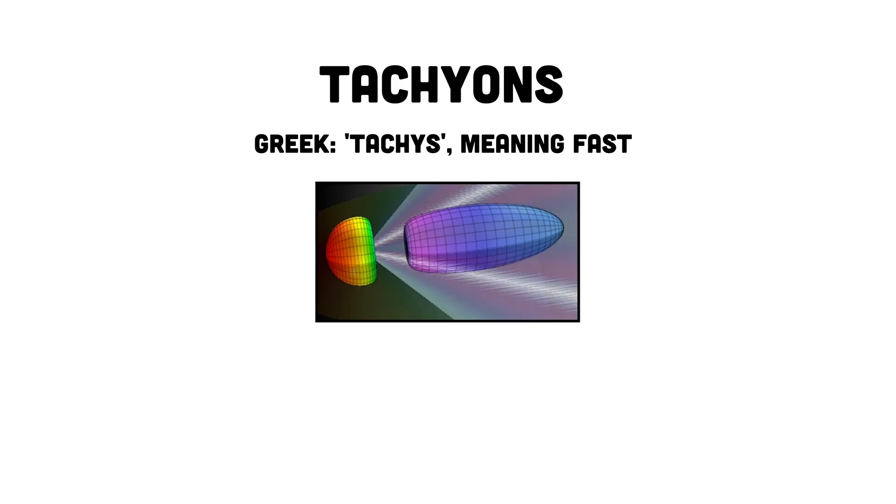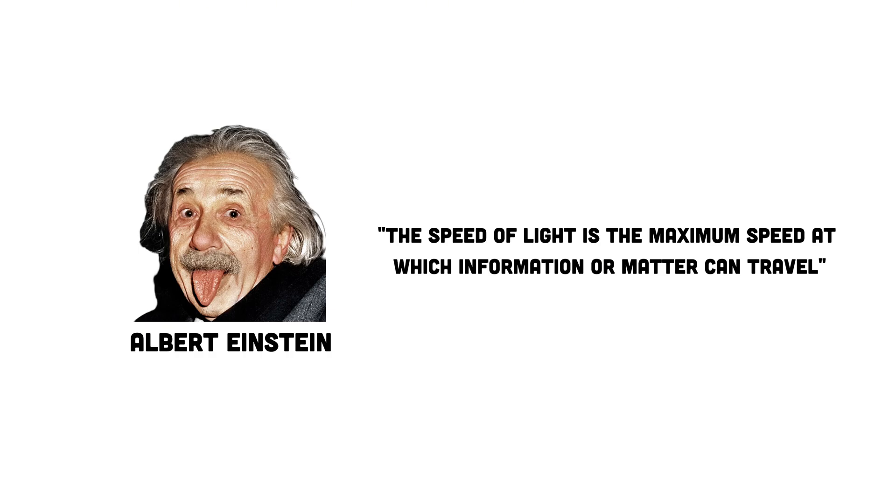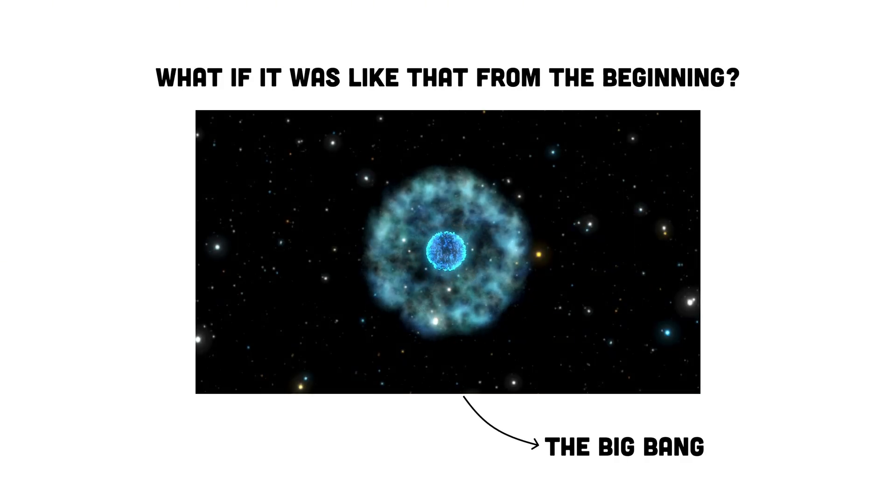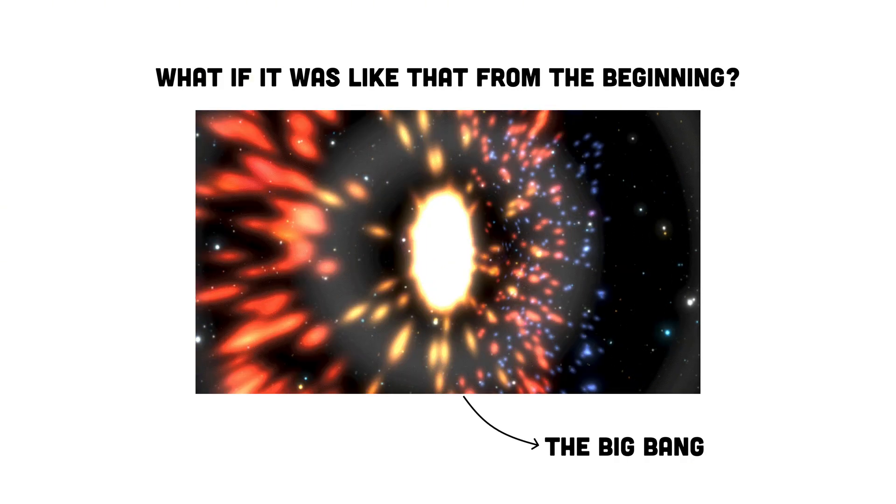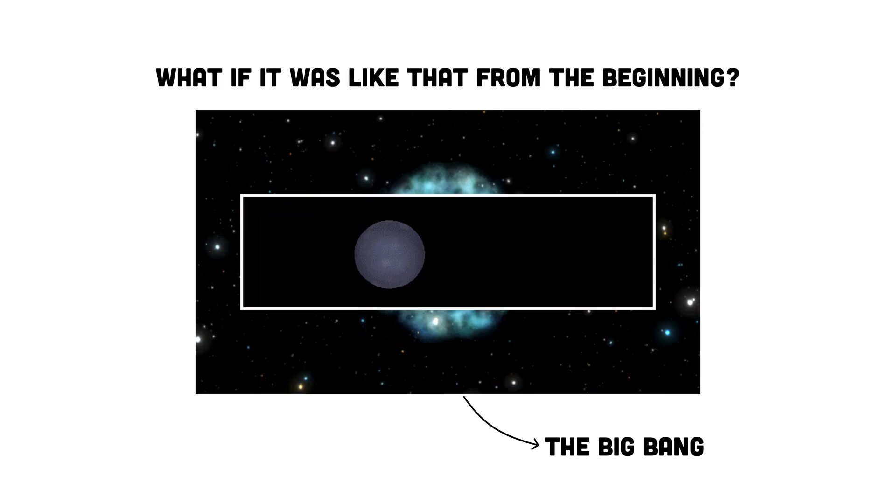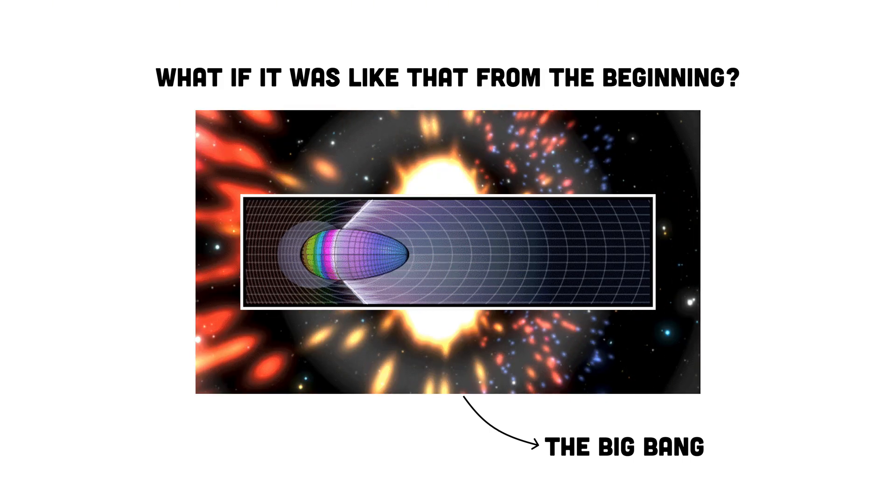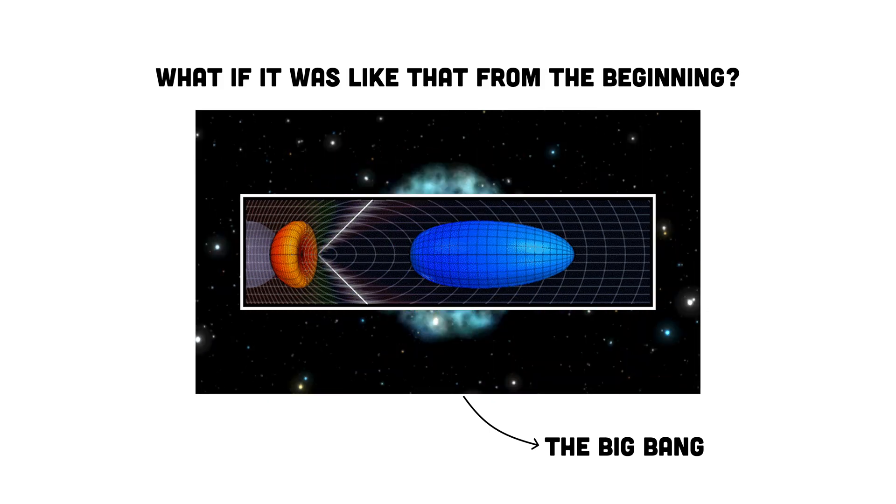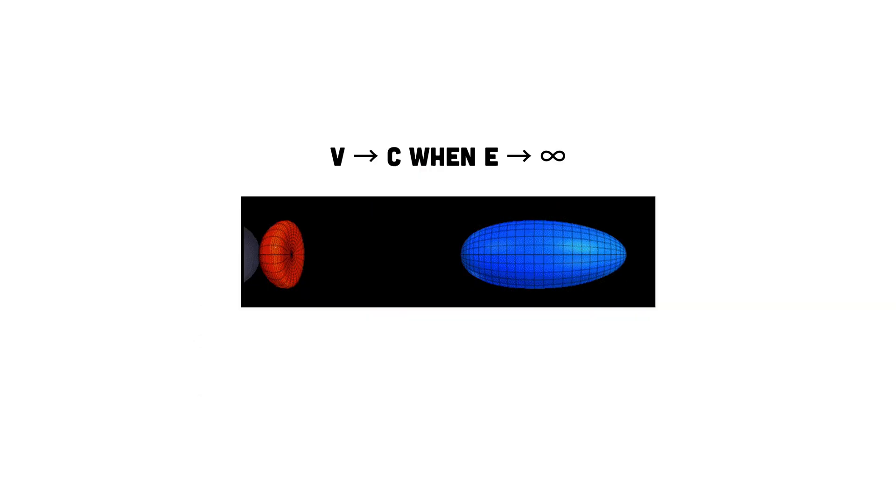Tachyons are hypothetical particles that always travel faster than light. According to Einstein's theory of relativity, a particle cannot accelerate to speeds faster than light. But what if it were already moving faster than light from the very beginning? What if it had been created this way in the Big Bang? If that were the case, it would be unable to slow down to the speed of light. In other words, it would require an infinite amount of energy to decelerate to light speed and would reach infinite speed when at its lowest energy state.